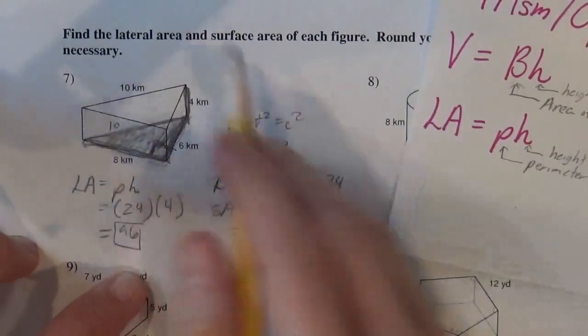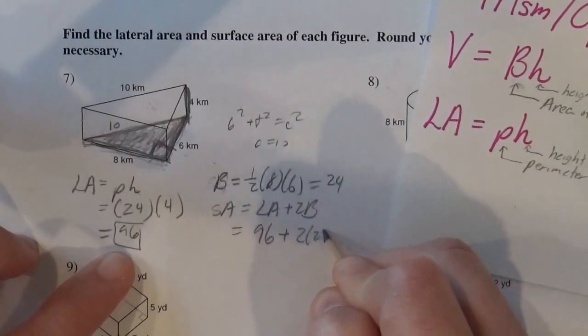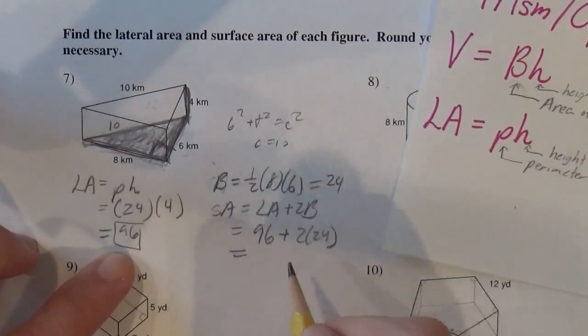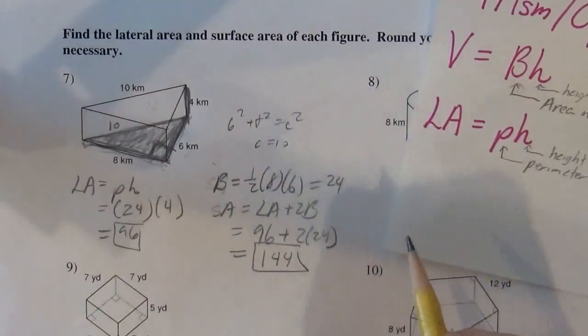So I can get the area of the whole thing by taking my lateral area plus 2 bases. So 96 plus 2 times 24 gives me 144, and we're quite happy.